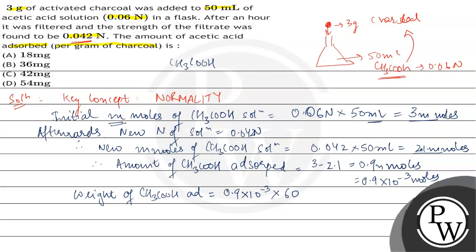How come 60? This is CH3COOH. There are 2 carbons so 24 plus 4 hydrogen so 4 plus 2 oxygen so 32, this will give you 60. So this gives us 54 milligrams of charcoal.